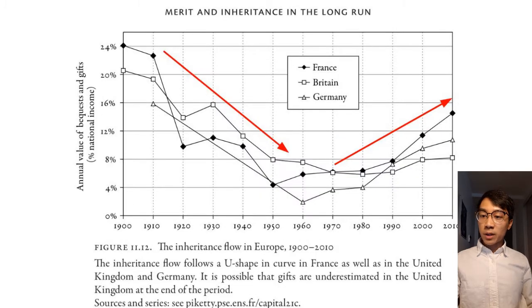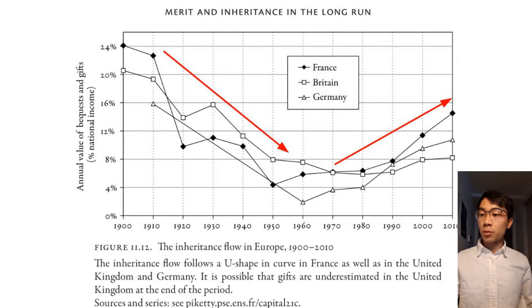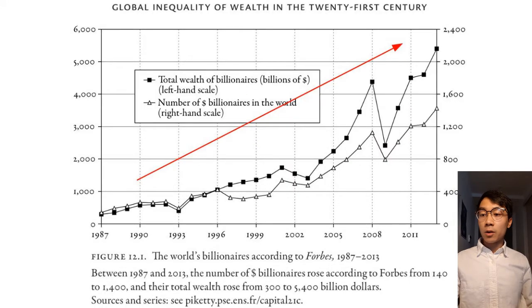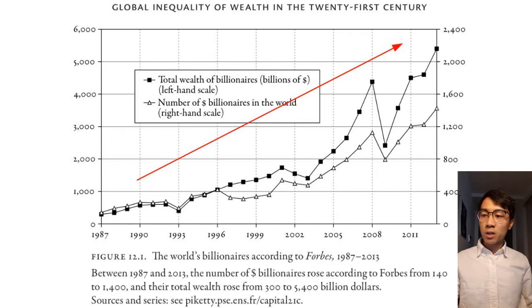In this graph, we see that the inheritance flow in Europe declined from roughly 1900 to the post-war period, but then has been increasing roughly linearly from 1970 to the present. We also see that the gross total number of world billionaires from 1987 to 2013 has also been increasing, from approximately 300 to nearly 5,500.